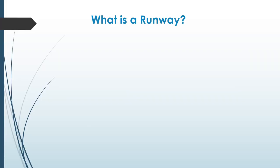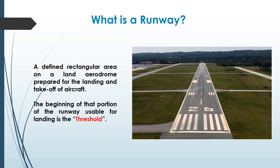There are a few terms we should be aware of before understanding declared distances. To start with, what is a runway? A runway is a defined rectangular area on land aerodrome prepared for the landing and takeoff of an aircraft. As you can see in the image, this is a runway, and the beginning of that portion of the runway that is usable for landing is called the threshold of the runway.